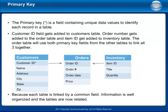Access maintains the relationships between related tables, making it easy to extract a customer and all of their orders. The primary key is a field containing unique data values to identify each record in a table. A Customer ID field is added to the customers table, an Order Number to the orders table, and an Item ID to the inventory table. The orders table uses primary key fields from the other tables to link all three together, so information is well organized and the tables are related.